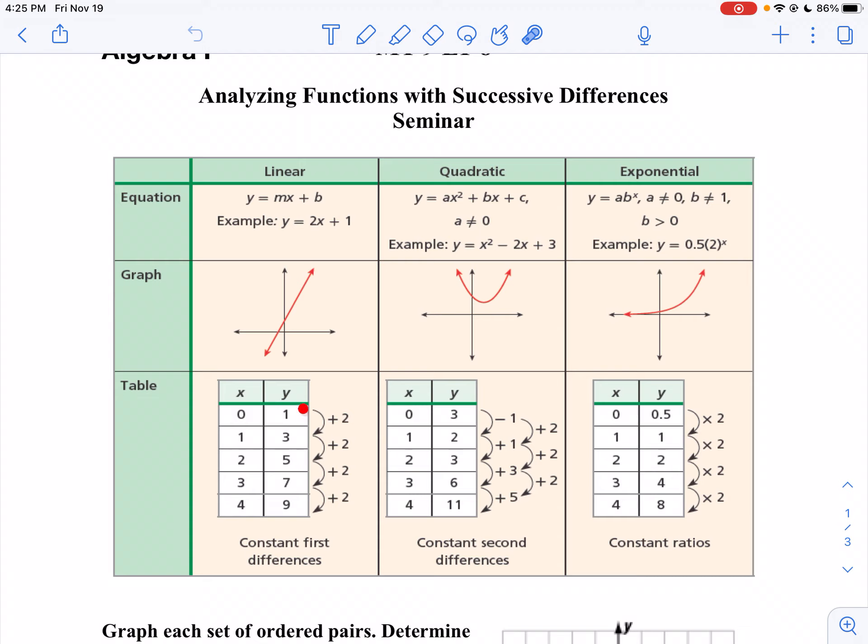Numerically, if the first differences are the same, it's linear. That is, if my change in x is constant and my change in y is constant, then it's linear. If my change in x is constant and I don't have my first differences being the same, but the second differences are the same, then it's quadratic. And then finally, if your differences aren't the same, but you divide them and they're always the same, then that's exponential.